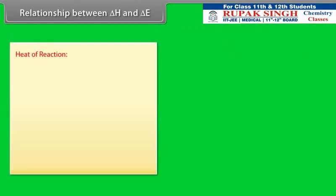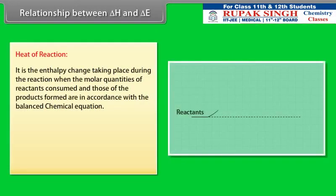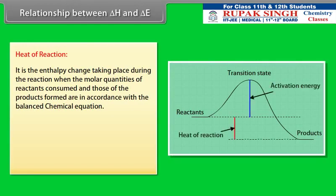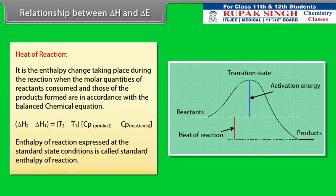Heat of reaction: it is the enthalpy change taking place during the reaction when the molar quantities of reactants consumed and products formed are in accordance with the balanced chemical equation. ΔH2 − ΔH1 = (T2 − T1) × (Cp of products − Cp of reactants). Enthalpy of reaction expressed at standard state conditions is called the standard enthalpy of reaction.